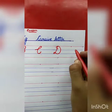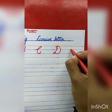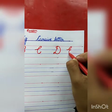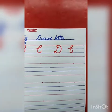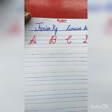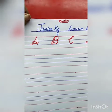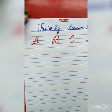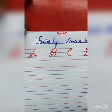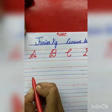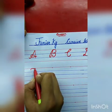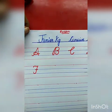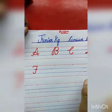Now tell me the next letter. E for elephant. Curve, semicircle, one more semicircle. E for elephant. The spelling of elephant is E-L-E-P-H-A-N-T, elephant. Now the next letter is F — very good! F for fish. The spelling of fish: F-I-S-H, fish.